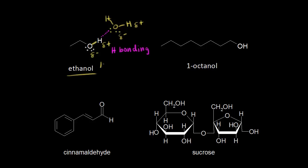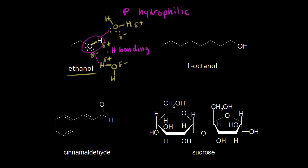We could even have some more hydrogen bonding — drawing in another water molecule, the oxygen is partially negative and the hydrogens are partially positive. So here's another opportunity for hydrogen bonding between the partially negative oxygen on ethanol and the partially positive hydrogen on water. So this portion of the ethanol molecule is polar and loves water — this is the polar region. We call this hydrophilic, or water-loving.